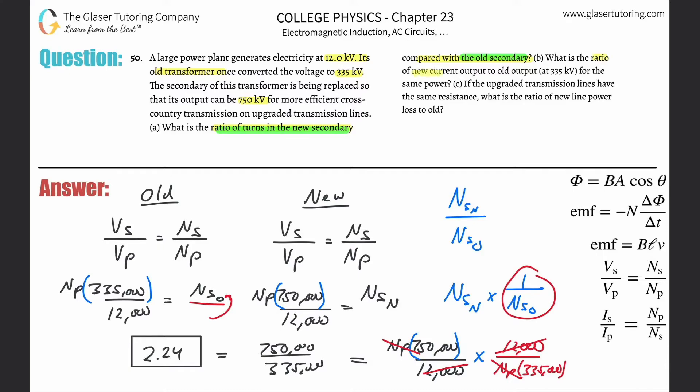Now letter B asks: what is the ratio of the new current output to the old output, for the same amount of power? We need to find the ratio of new secondary current to old secondary current — I_S_new divided by I_S_old.